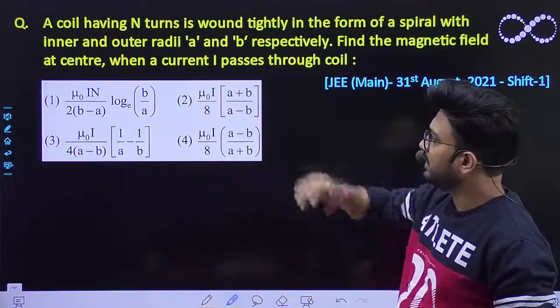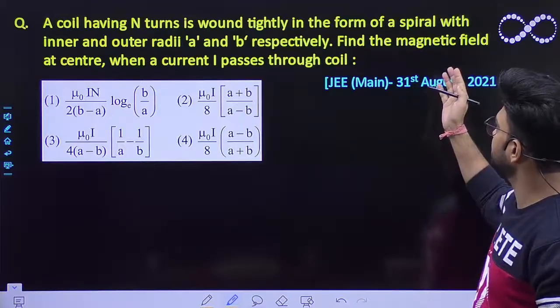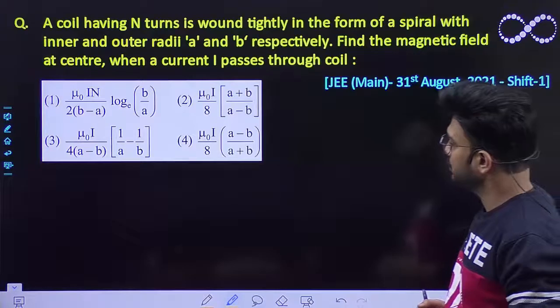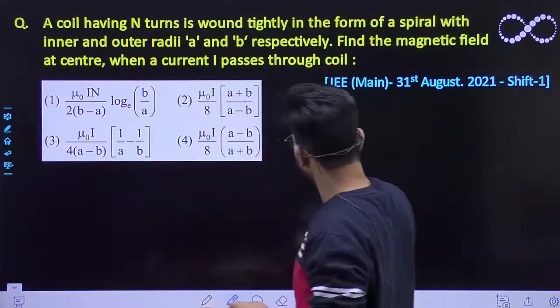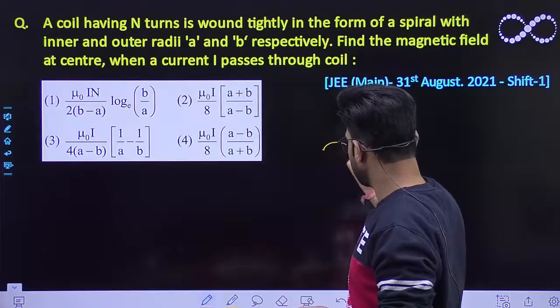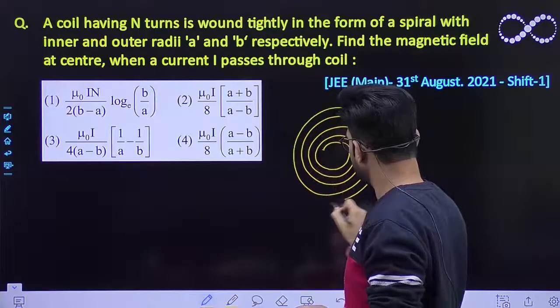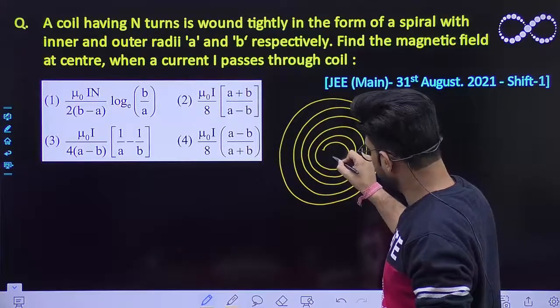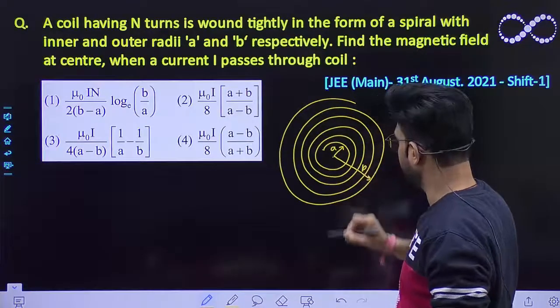Question says a coil having N turns is wound tightly in the form of a spiral with inner and outer radii A and B. So you have been given a coil just like this. So this is the coil which I have been given to you. Let this be the center and this distance, inner radius is A and outer radius is B.